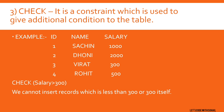So looking at the table: employee id 1 has salary 1000 — is that greater than 300? Yes. Employee id 2 has salary 2000 — greater than 300? Yes. Employee id 3 has salary 300 — is 300 greater than 300? No. Employee id 4 has salary 500 — greater than 300? Yes. So records 1, 2, and 4 will be given as output. This is how the Check constraint gives an additional condition to the table.